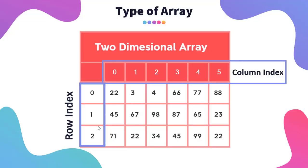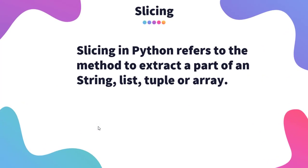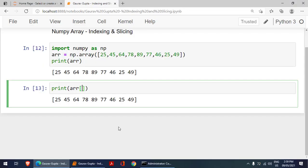Now we will talk about slicing. Slicing in Python refers to the method to extract a part of a string, list, tuple, or array. For a one-dimensional array, we have three arguments: start, stop, and step.